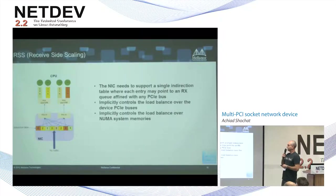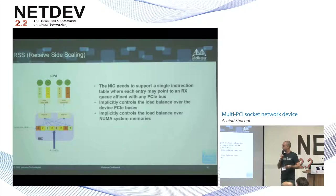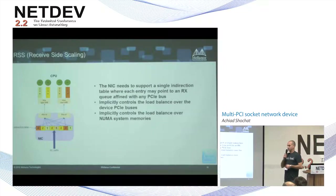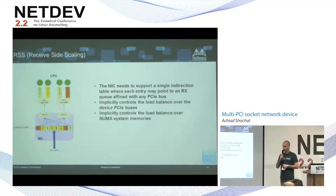Regarding RSS — receive side scaling — we used to have a single indirection table in the device, but now we have receive queues affined with multiple PCI buses. The NIC will have to support a single indirection table pointing to receive queues that reside on different PCI buses. Another benefit is that the RSS indirection table can be used not only to load balance traffic among the different cores, but also to implicitly control load balancing over the multiple PCI buses using the same mechanism.